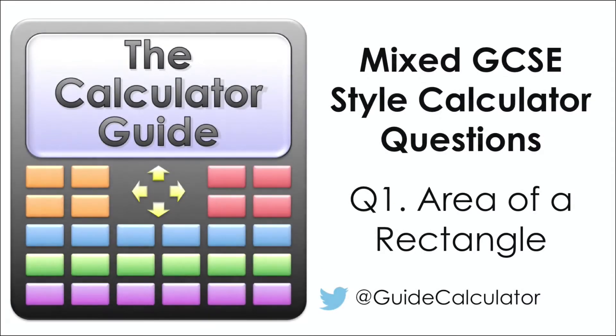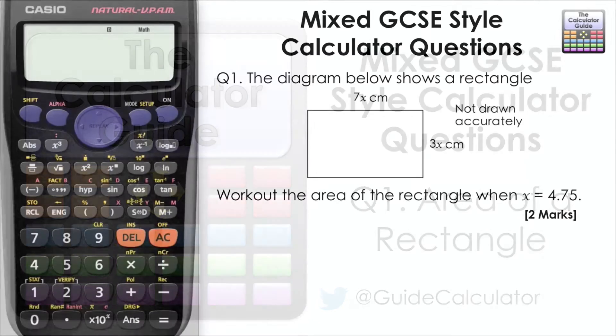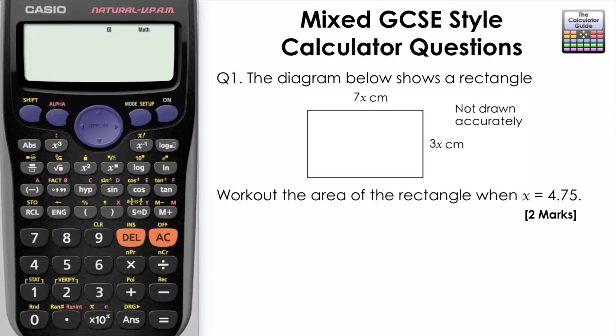In this question we are going to use the calculator to find the area of a rectangle where the letter X is involved. In the question we have to work out the area of the rectangle when X equals 4.75.